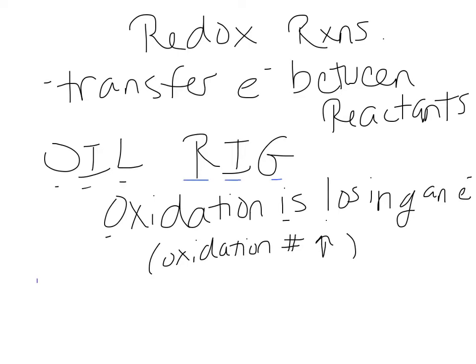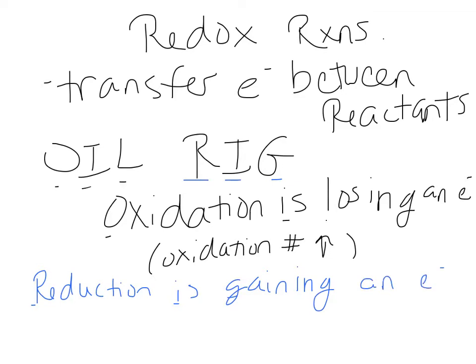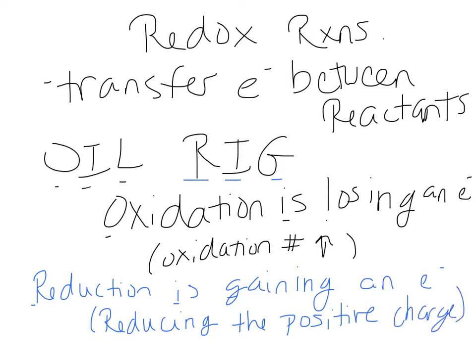When an atom goes through oxidation, it loses an electron, so its positive charge increases. A positive oxidation number is the total number of electrons that have been removed to get it to its current state. A negative oxidation number is the total number of electrons that have been added to get it to its current state.